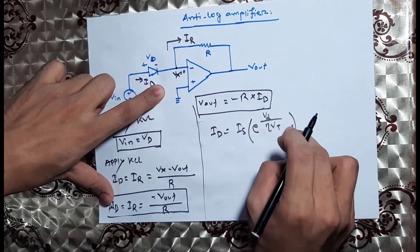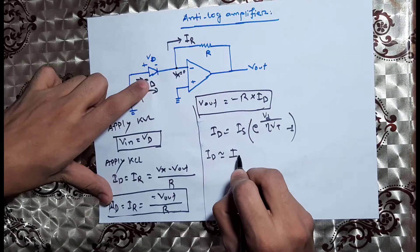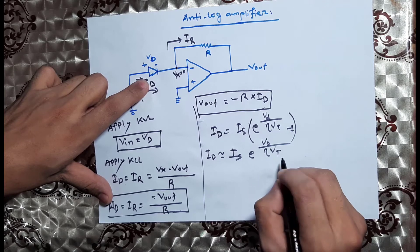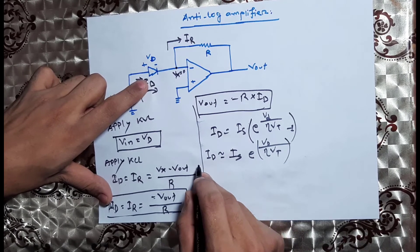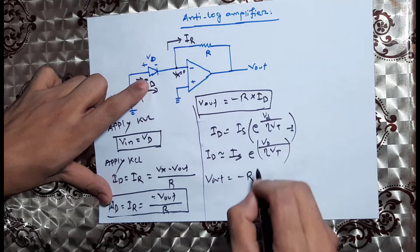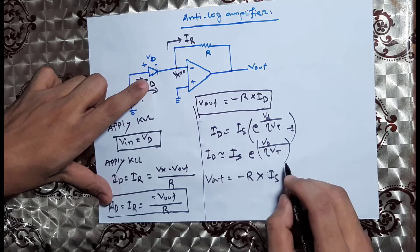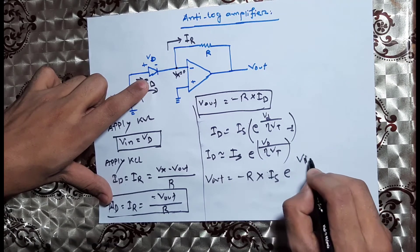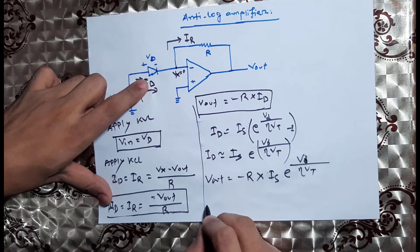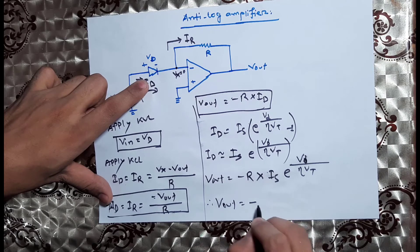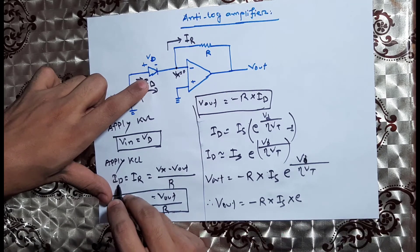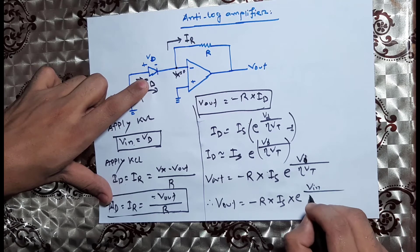So id is approximately equal to Is times e to the power Vd divided by eta·Vt. Therefore, Vout equals negative R times id, which gives Vout equals negative R times Is times e to the power Vin divided by eta·Vt.